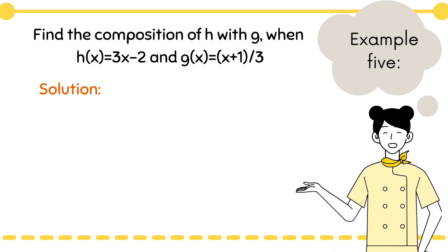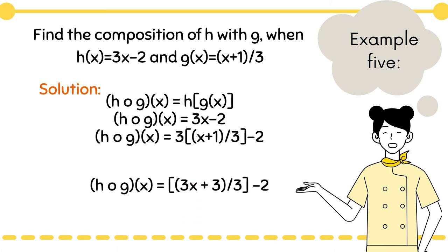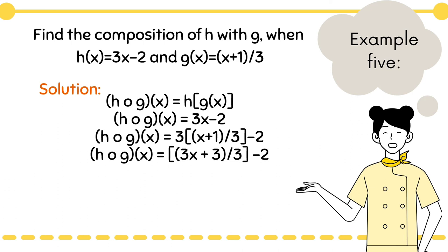For our last example, example number five: find the composition of h with g when h(x) = 3x − 2 and g(x) = (x + 1)/3. So we write our solution h of g of x, then write down our dependent function 3x − 2. Substitute x with (x + 1)/3, giving us 3 times [(x + 1)/3] − 2. Distribute 3 to the numerator and it becomes (3x + 3)/3 − 2.